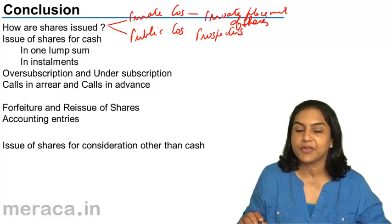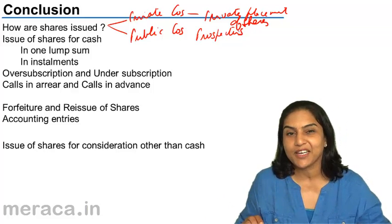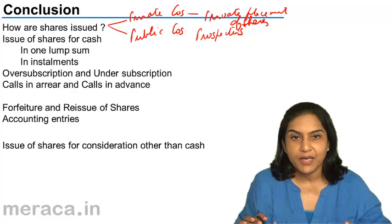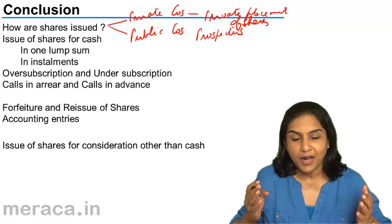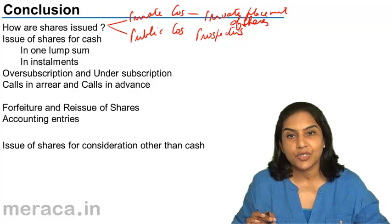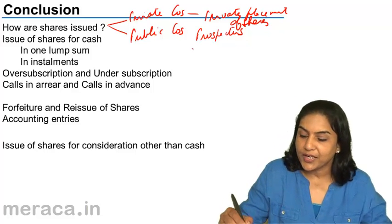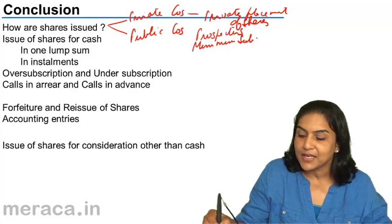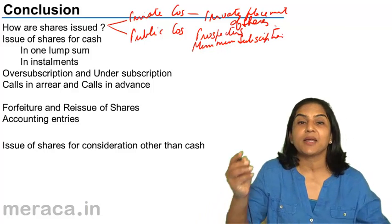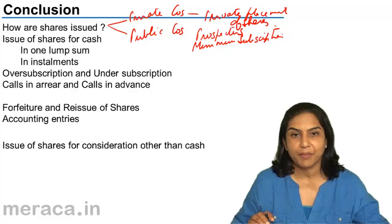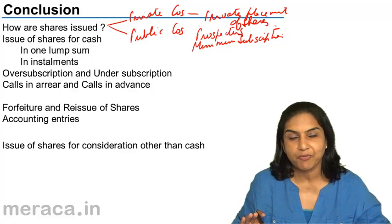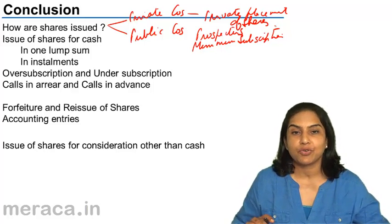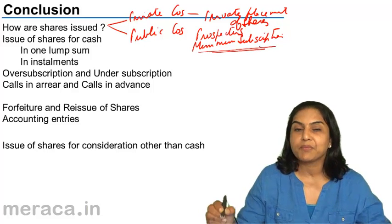We covered what a prospectus is — a prospectus is nothing but an invitation to the public to subscribe to the shares of the company. An issue is made and applications are received in response. We then looked at the concept of minimum subscription: SEBI requires that 90% of the issue must be subscribed for by the public. If 90% is not subscribed, the issue falls through and the money has to be refunded.